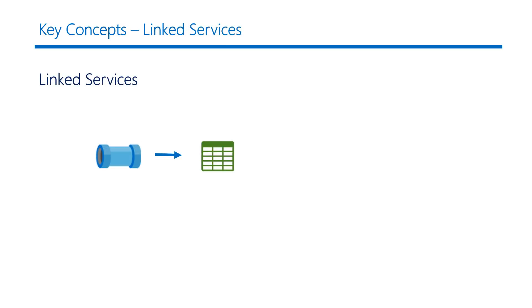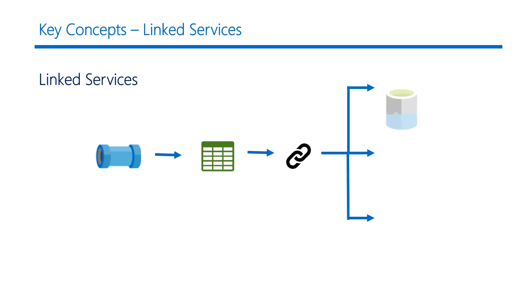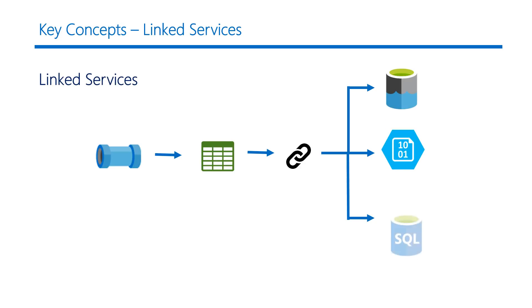The datasets defined in Azure Data Factory require a connection string to connect to your cloud or on-premise data to fetch the data for further processing. Linked services contain information like connection strings and authentication details such as tokens or user ID and password. Linked services allow you to connect to different data stores like Azure Data Lake Store, blob storage, or a SQL Azure database.